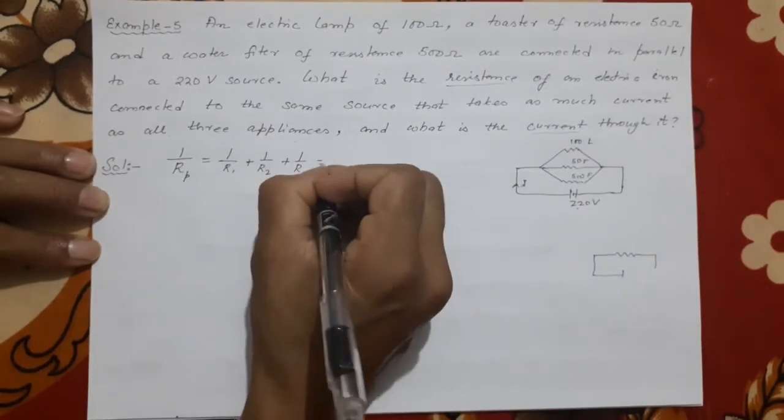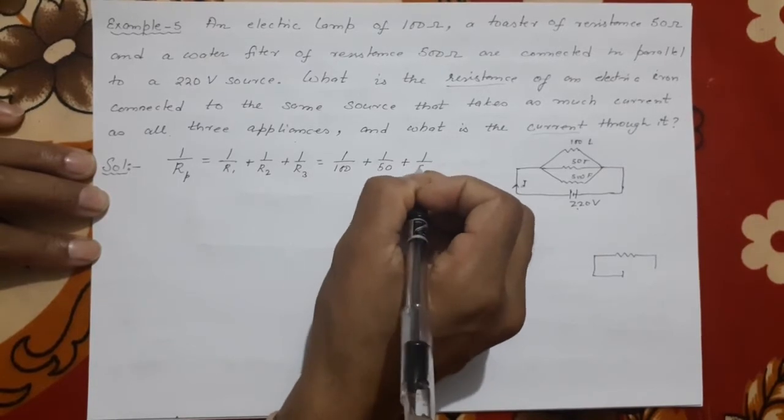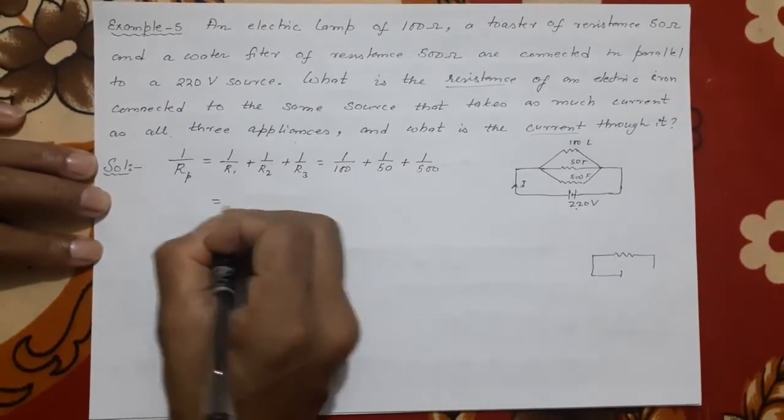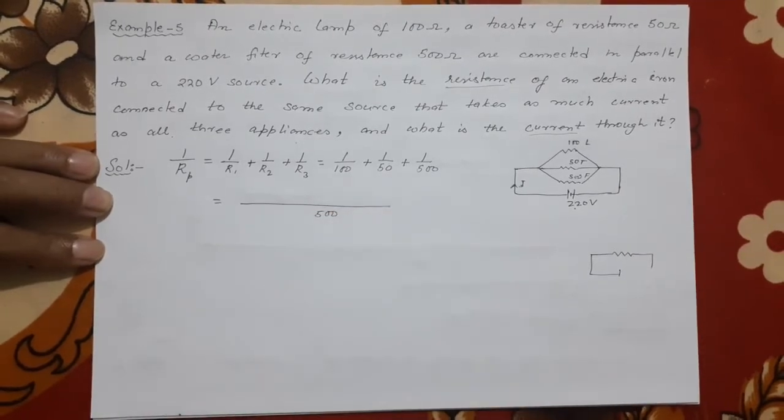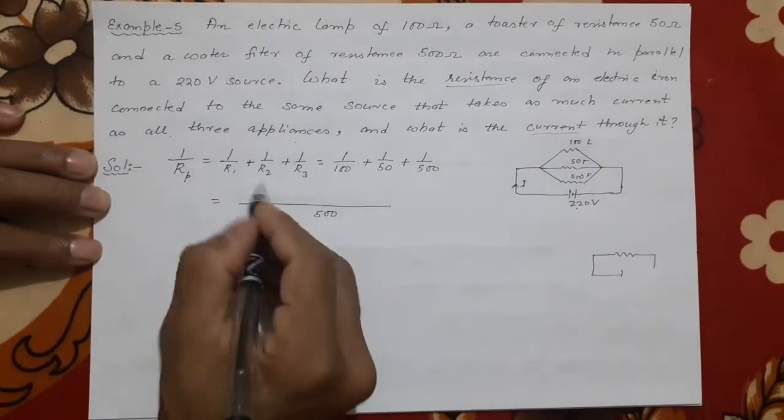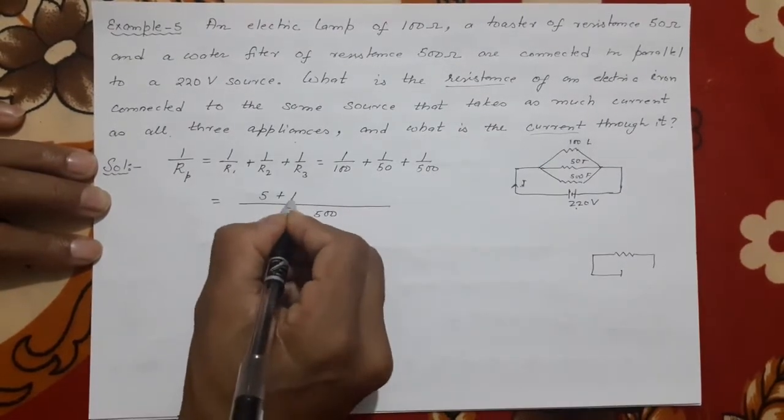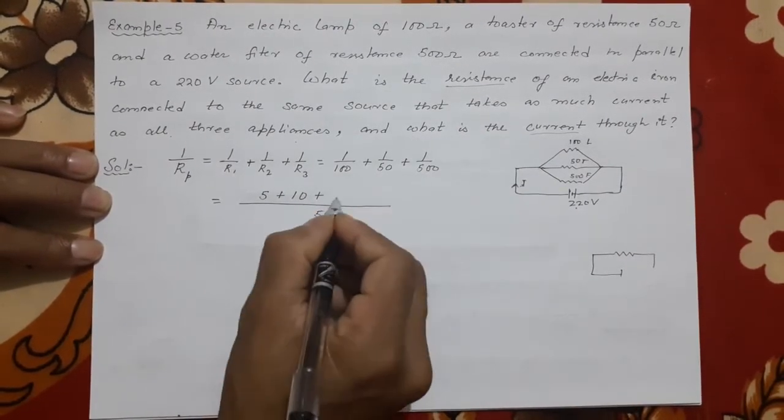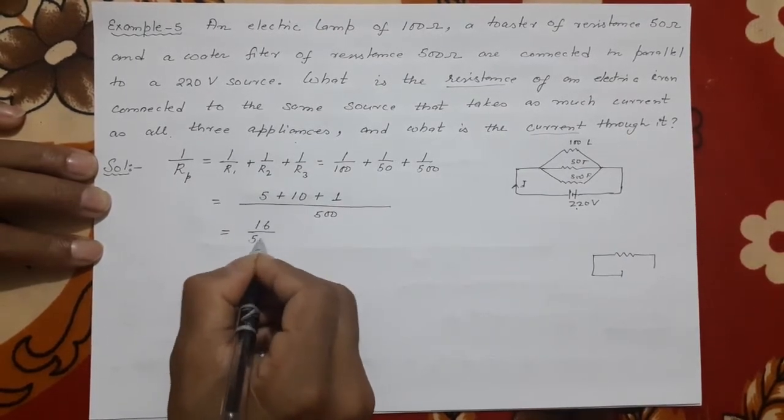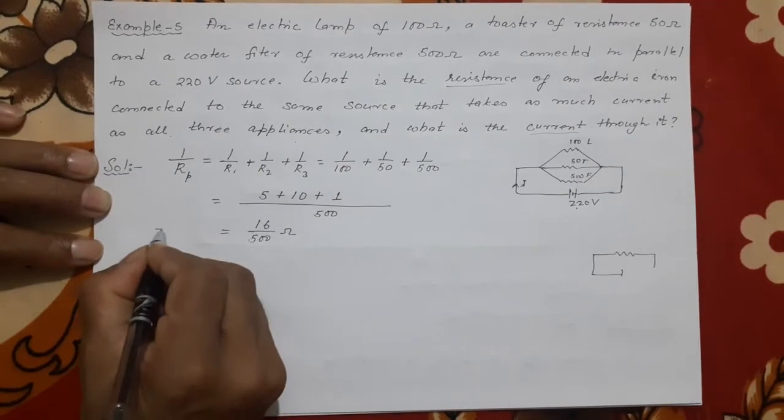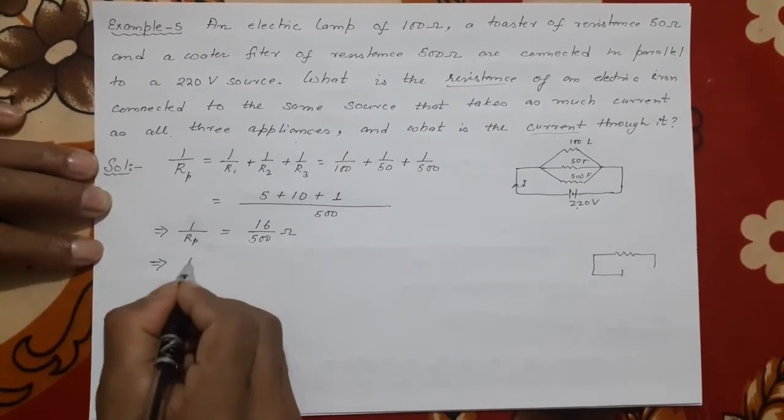You can write L, T, F also but I will not write that. 1/100 + 1/50 + 1/500. So what is LCM? 100, 150, and 500, LCM is 500. 100 fives are 500, so one times five is 5. 50 tens are 500, so one times ten is 10. 500 ones are 500, so it is 1. This will give me 16/500 ohms. This is 1/Rp, so that is why Rp will be 500/16 ohms.